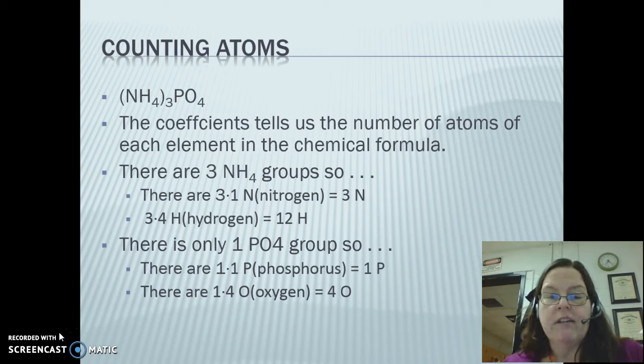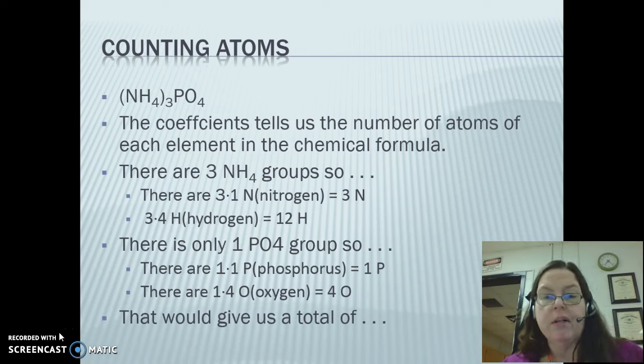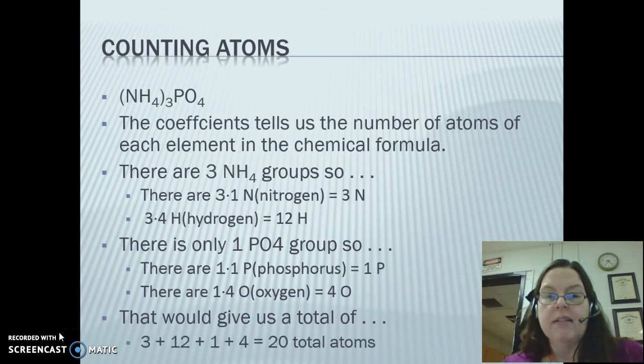And I should change that four to a subscript. What would the total be now? Three plus 12 plus one plus four, that gives us a total of 20 atoms. So we have 20 atoms in that particular compound of NH₄₃PO₄, ammonium phosphate.